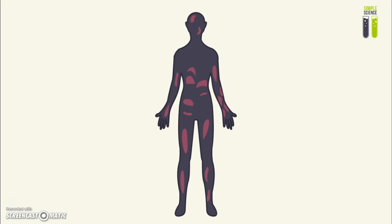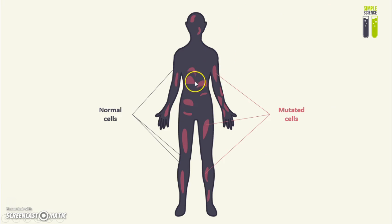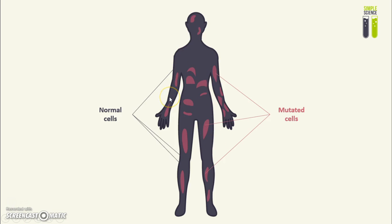To visualize this a little better, I have a diagram of a person with two populations of cells in their body. The blue regions represent the normal cells, and the red regions are the mutated cells. You can see that there are areas where cells are mutated and areas where cells are normal.